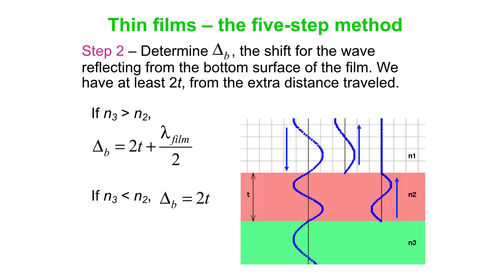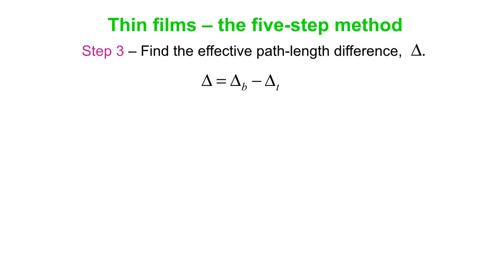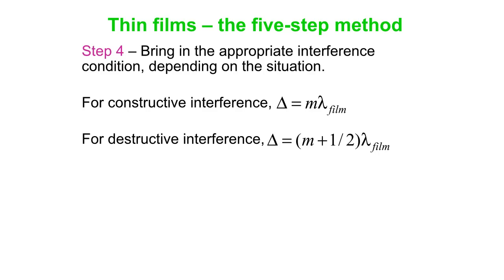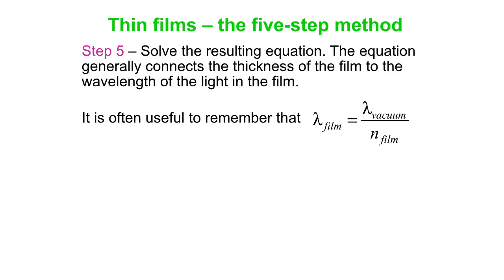You've got delta b and delta t. You want to find the net effective path length difference, so you just subtract those two things. Delta b minus delta t. Then you bring in the appropriate interference condition. You set that overall delta, which is delta b minus delta t, equal to an integer number of wavelengths for constructive interference. Or set it equal to n plus a half wavelength for destructive interference. Then you just simply solve the equation. The wavelength in the film is the wavelength in vacuum divided by the index of refraction of the film.